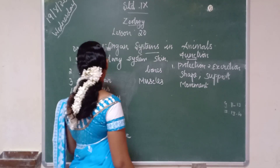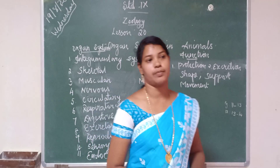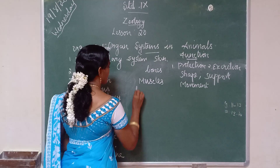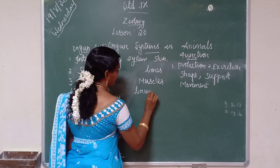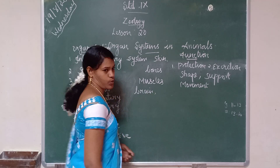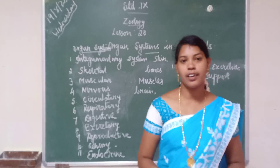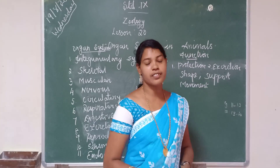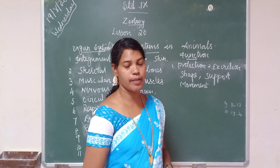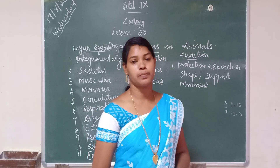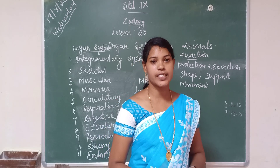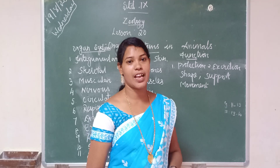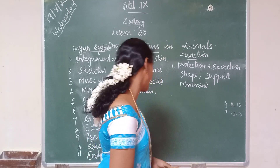The next one is the nervous system. It includes brain, spinal cord, and nerves. Its function is to transmit nerve impulses — impulses means messages. The messages are carried by nerves from inside to outside as well as outside to inside.